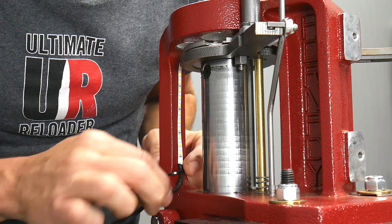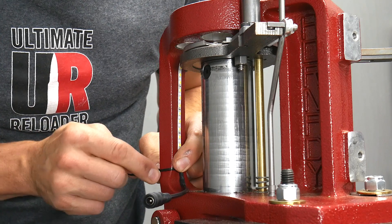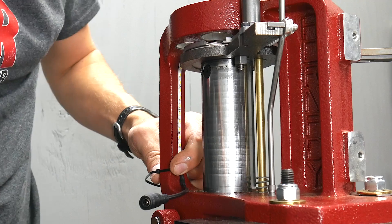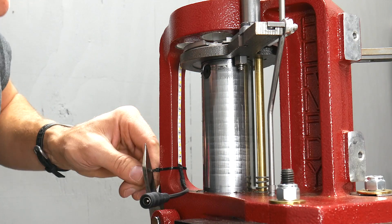Diagonal pliers are good for chopping these, but I don't have any with me at the press right here. So I'm just going to use a pair of scissors, which is fine.